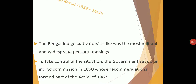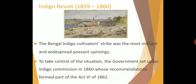Next is the Indigo Revolt. The Bengal Indigo cultivators' strike was the most militant and widespread peasants' uprising. Indigo is a type of plant. The European Indigo planters compelled the tenant farmers to grow Indigo, which was highly disadvantageous to the farmers. They forced Indian farmers to cultivate only Indigo instead of other crops, and also forced them to sell cheap and accept advances that benefited only the planters.